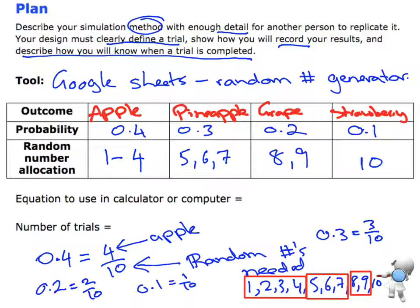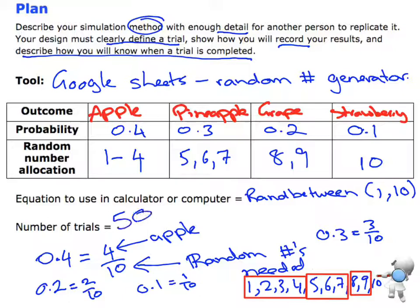I've now allocated all the random numbers so there's the right number in each category to match the probability. The formula I'm going to use is RANDBETWEEN, generating a random number between 1 and 10. In terms of the number of trials, I want to do 50 trials.